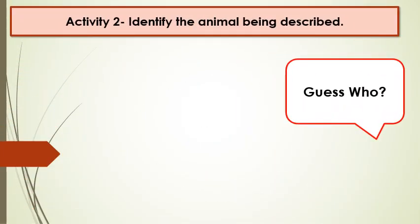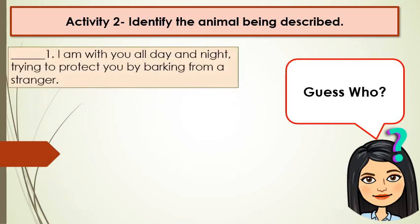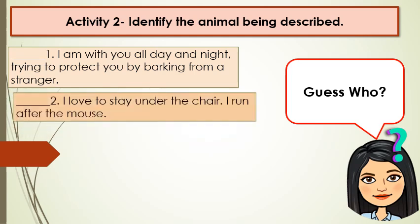Now, let's try to answer Activity 2. Identify the animal being described — Guess who? Number 1: I am with you all day and night, trying to protect you by barking at a stranger. Guess who? Number 2: I love to stay under the chair. I ran after the mouse. Guess who?